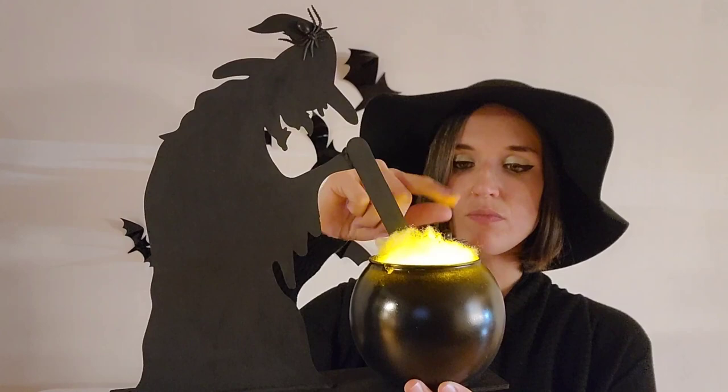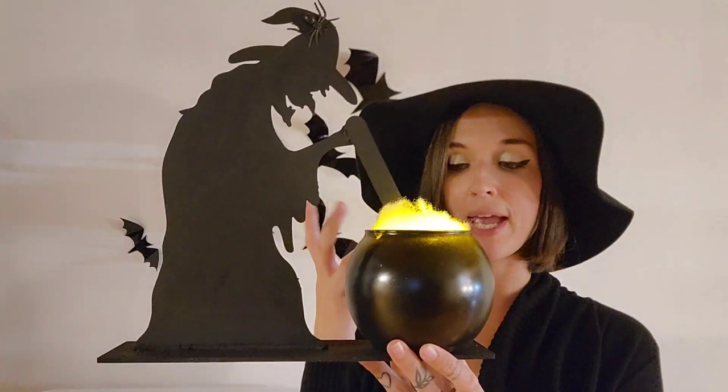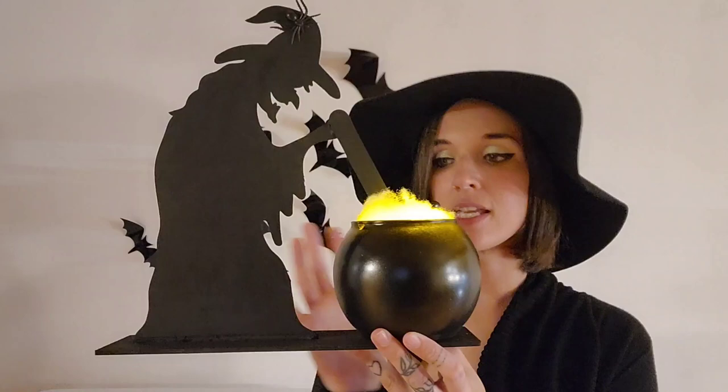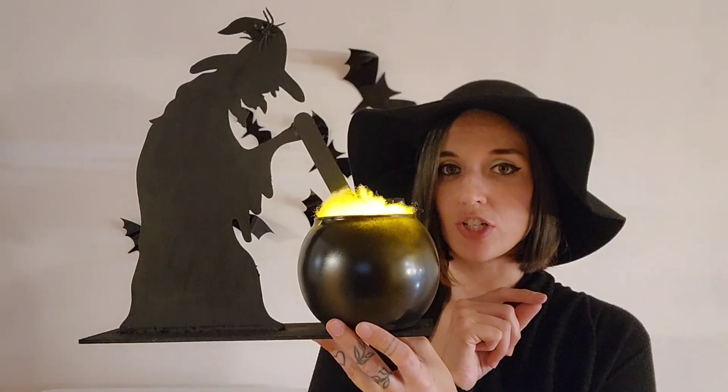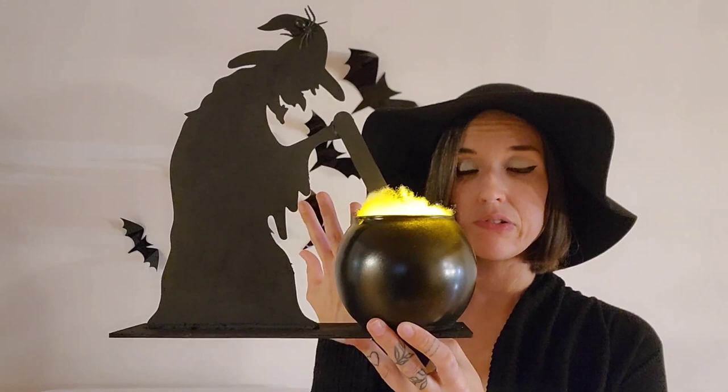But they do have little tiny spiders at Dollar Tree. And then also I did use spray paint to paint this, but you can use acrylic paint. But I would suggest putting a layer of Mod Podge over it if you do the acrylic paint. And I know that they do sell Mod Podge at Dollar Tree, they just haven't seen any at any of my Dollar Trees around me lately.